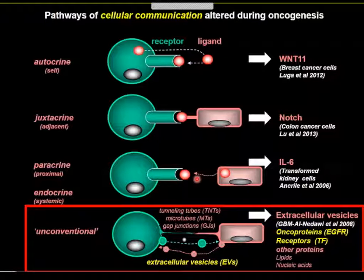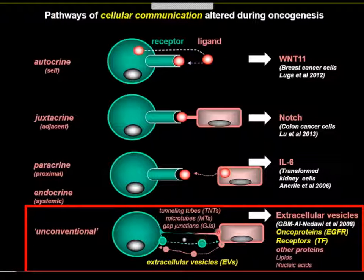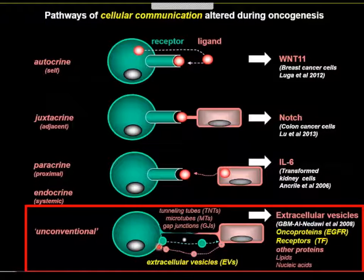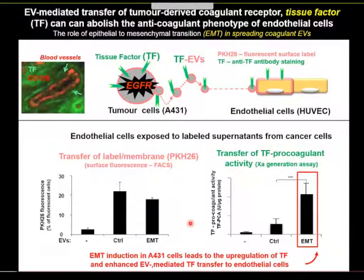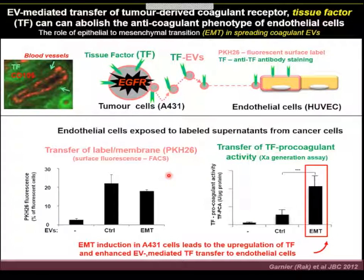We don't fully understand the mediators of these interactions. We as a field have become comfortable with molecular interactions involving receptor-ligand systems in autocrine, paracrine, and other configurations. The frontier involves more complex interactions — physical contacts between cells and supramolecular structures such as nanotubes, microtubes, gap junctions, and extracellular vesicles that may act over longer distances, detaching molecular cargo and transferring it to recipient cells.